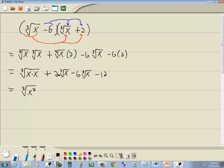Now since these radicals are the same, we can add or subtract the numbers out in front. In this case, we have a positive 2 minus 6. That gives us negative 4 cube root of x minus 12. And that's our answer.